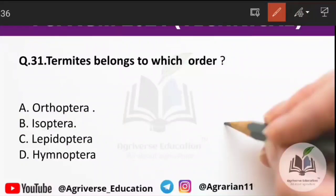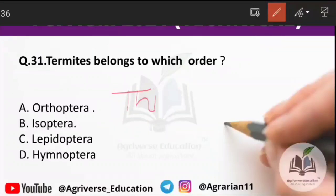So friends, these were today's questions. I hope these questions will help you in your exam. Before you go, I have an important question for you — please answer in the comment section: which is called the third generation pesticide? Options are: (A) carbamates, (B) botanicals, or (C) juvenile hormones. This is all for today. See you next time. Tata, bye bye and take care.